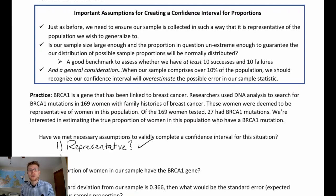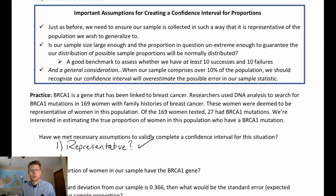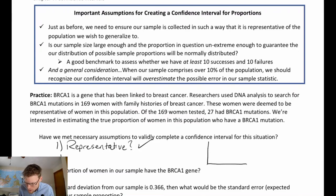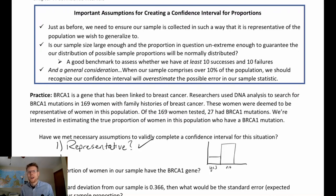The second assumption is normality. We need the distribution of possible p-hats to be normally distributed in order to use a confidence interval with this parametric model. That just means we have a distributional assumption about the distribution of p-hat. The true population of responses is going to be yeses and noes — essentially values of 0 and 1.